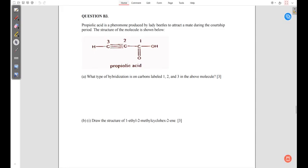Alright, so B3 is an exam question based on organic chemistry. It asks what type of hybridization is on carbons labeled 1, 2, and 3 in the above molecule.